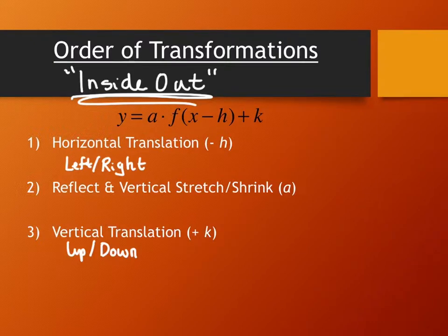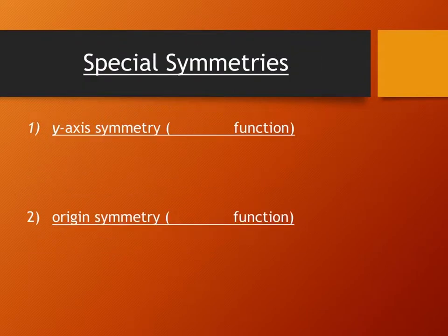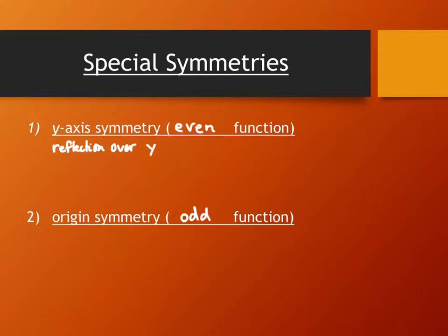There's one more piece of information in this section, and this information is about symmetry. There are two special types of symmetry that we're going to encounter. One is called y-axis symmetry. These are also called even functions. The other one is called origin symmetry, and these are called odd functions. If it's y-axis symmetry or it's even symmetry, then this is basically a reflection over the y-axis.